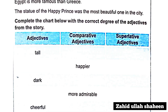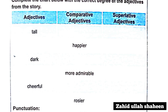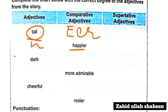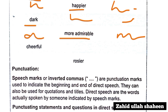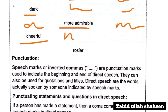Complete the chart below with the correct degree of the adjective. 'Tall' — comparative: taller, superlative: tallest. 'Happy' — happier/happiest. 'Dark' — darker/darkest. 'Admirable' — more admirable/most admirable. 'Cheerful' — more cheerful/most cheerful. 'Rosy' — rosier/rosiest.